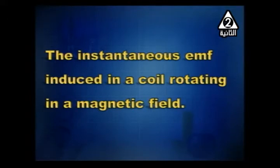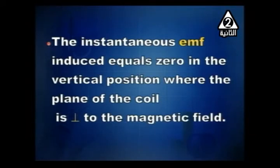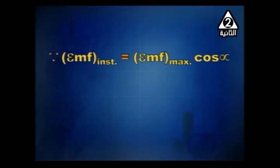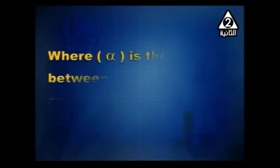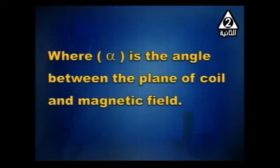When does the instantaneous EMF induced in a coil rotating in a magnetic field equal zero? The instantaneous EMF equals zero in the vertical position, where the plane of the coil is perpendicular to the magnetic field — the sides of the coil move parallel to the field, so no cutting occurs and no EMF is induced. EMF instantaneous = EMF_max · cosα; EMF = 0 when α = 90°, since cos 90° = 0. Here α is the angle between the plane of the coil and the magnetic field.